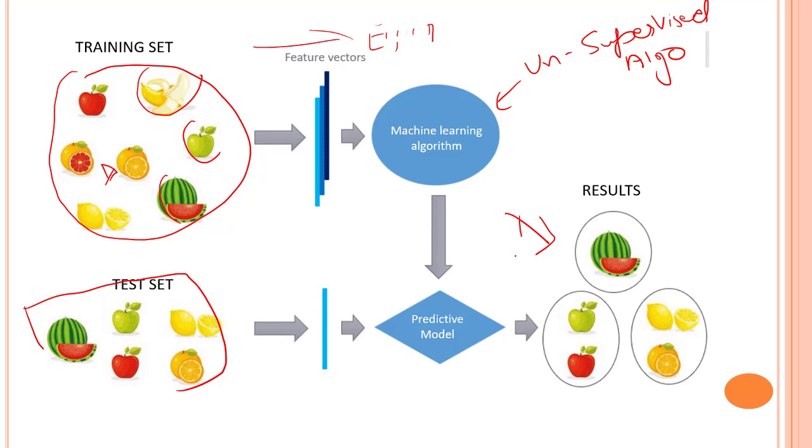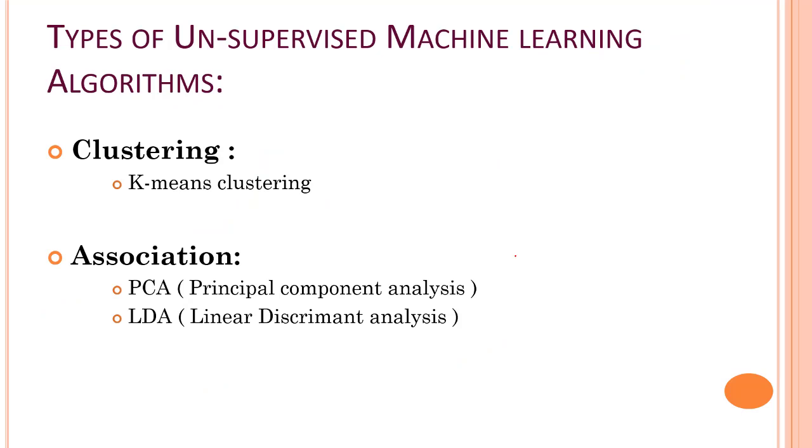Now let's look into the different types of unsupervised learning that we are going to discuss in this course. Basically, unsupervised learning is broadly classified into two types, that is clustering and association. Clustering is a method of grouping the objects into clusters such that objects with most similarities remain into a group and with less or no similarities with the objects of another group. Cluster analysis finds the commonalities between the data objects and categorizes them as per the presence and absence of those common factors.